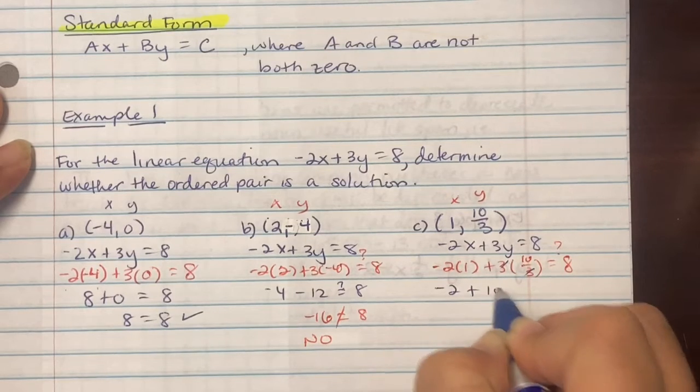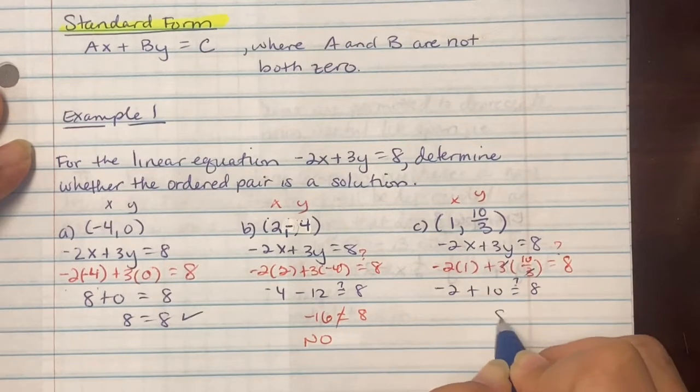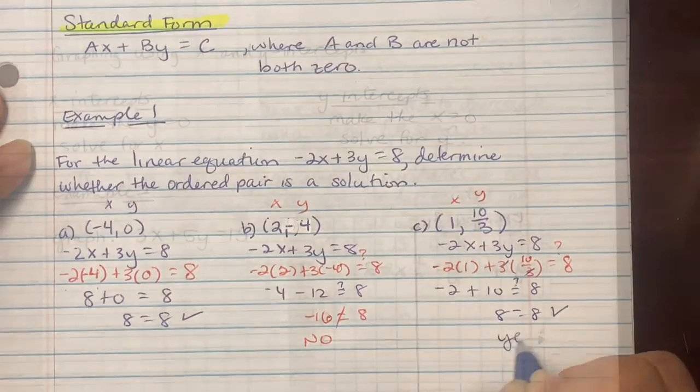So we get -2 plus 10. Does that result in 8? We get 8 equaling 8. So it is a solution.